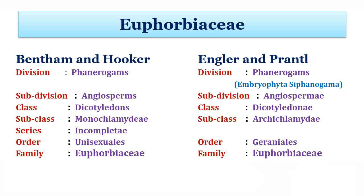This is the systematic position as per the Bentham & Hooker and Engler & Prantl system of classification. Unlike Bentham and Hooker, Engler and Prantl does not propose the series in Incompletae. There is also another difference: the name given for the taxon subclass is different in both systems. Bentham and Hooker proposed Monochlamydae and Engler & Prantl proposed Archichlamydae as a subclass. The name given for the taxon order is also different. There are a lot more differences than this, but here I have discussed only with respect to this slide.